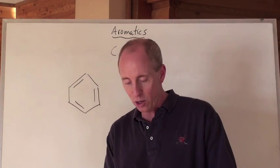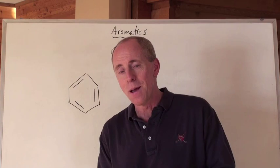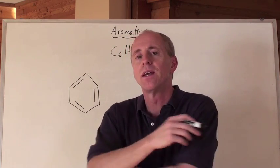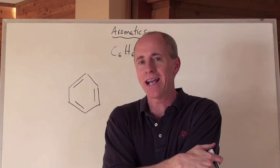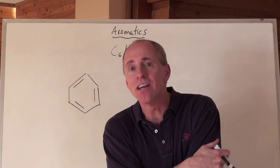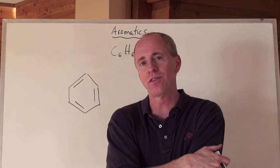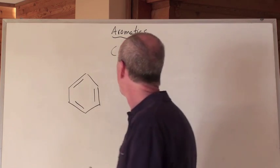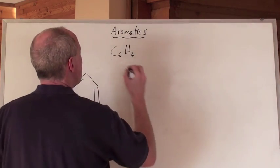It's a cyclo, and a hex, but there's enes at the 1, 3, 5. Cyclohexa-1,3,5-triene, for the three enes. Cyclohexa-1,3,5-triene. Nobody wants to say that. So therefore, we call that benzene.